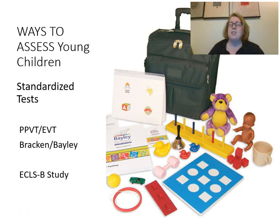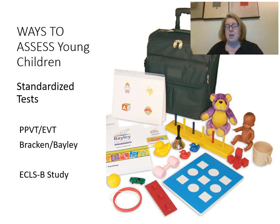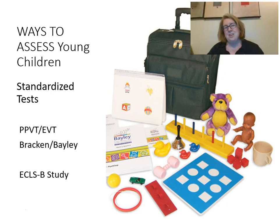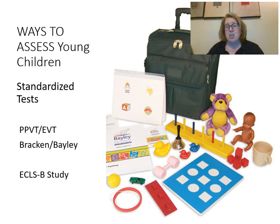There are some really standardized ways to measure development. We already looked at the PVVT — that was the test with receptive vocabulary — and the EVT is the opposite, where we solicit words. The Bracken and the Bayley are measures of developmental scales. The ECLS-B study is a database of a nationally representative sample of children born in 2002. It tracked children from birth, then at nine months, 12 months, two years, the year before kindergarten, and at kindergarten — gathering developmental scales, parent and teacher interviews, health information, social interactions, and achievement levels.